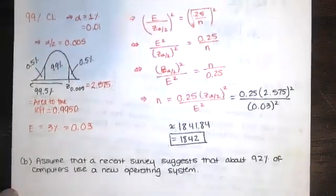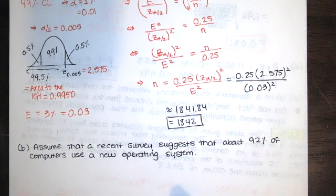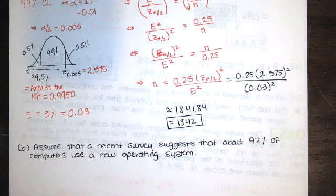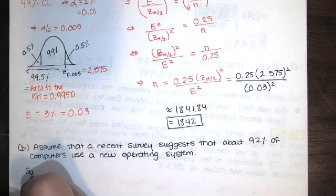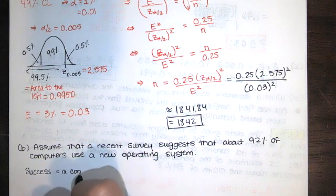Okay, then the next part of the question asks us to do the exact same thing, but then adjust it. It says, this time, assume that a recent survey suggests that about 92% of computers use a new operating system. So if we're thinking of success as a computer that uses a new operating system.